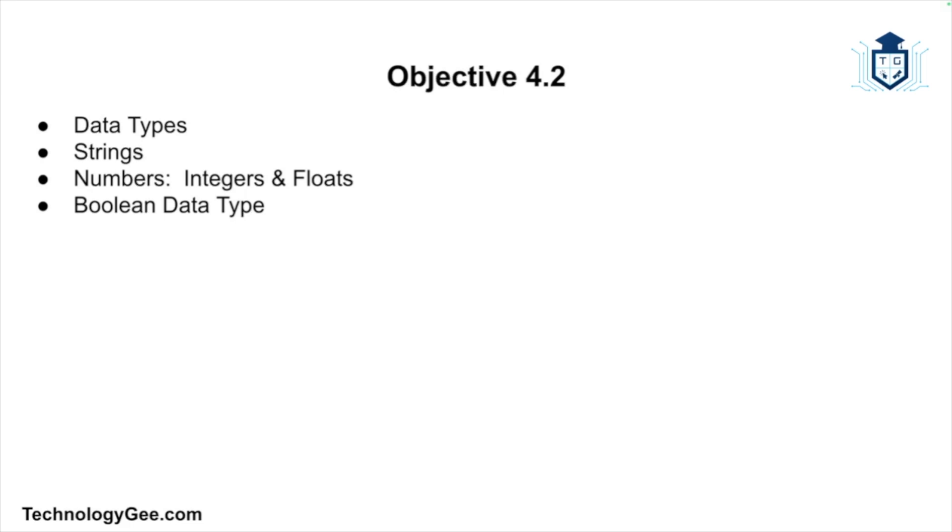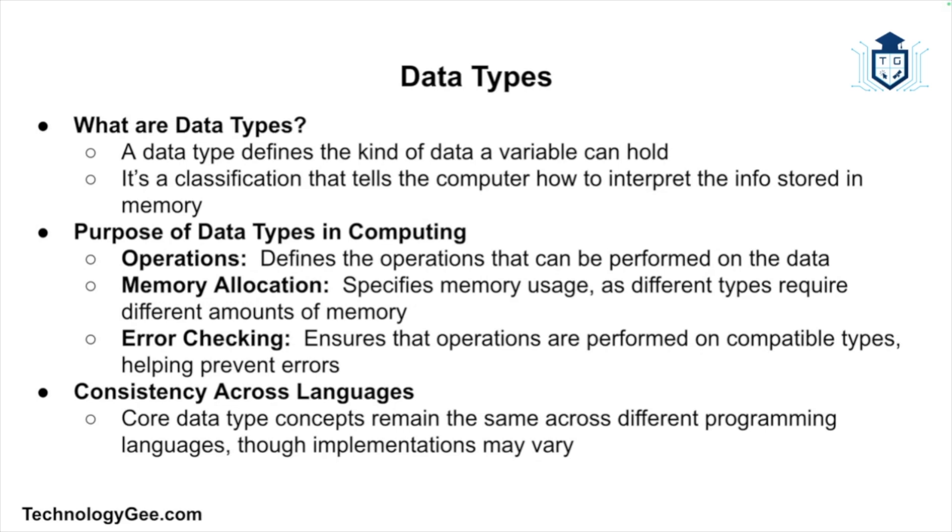Before we jump into specific data types, let's talk about what a data type actually is. In computing, a data type defines the kind of data a variable can hold. It's a classification that tells a computer how to interpret the information stored in memory. Why do data types matter? They define the operations that can be performed on the data, they specify memory usage, and they help with error checking by ensuring operations are performed on compatible types.